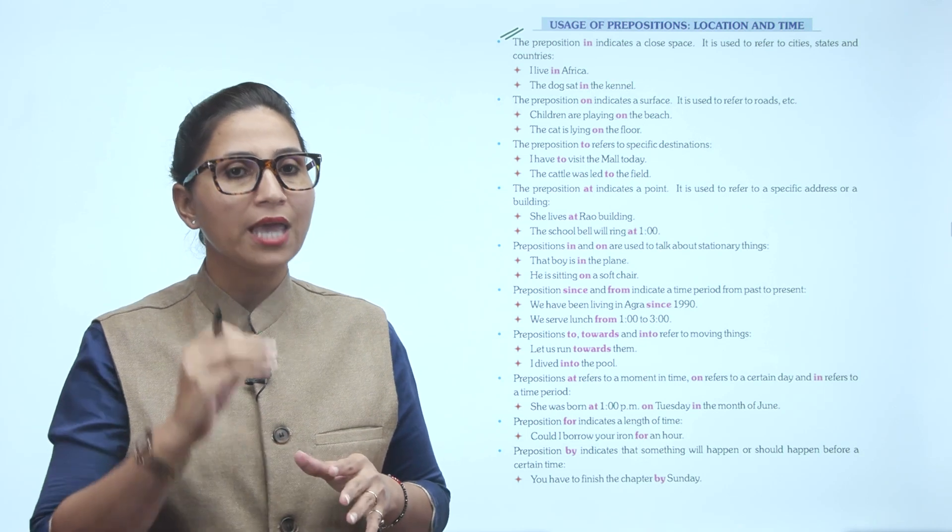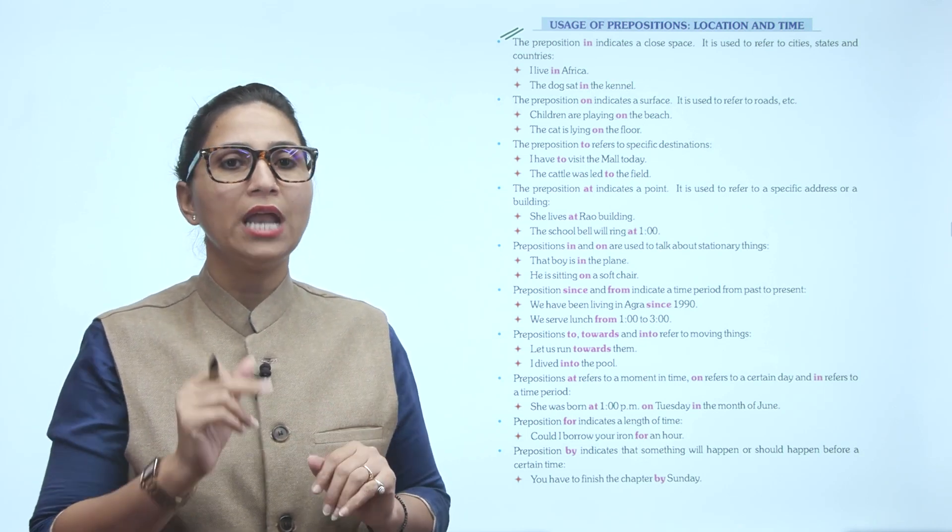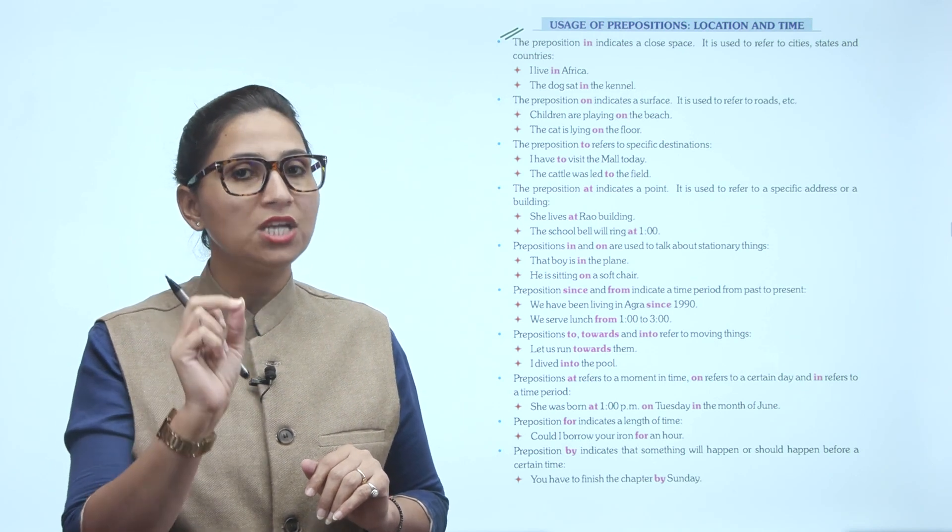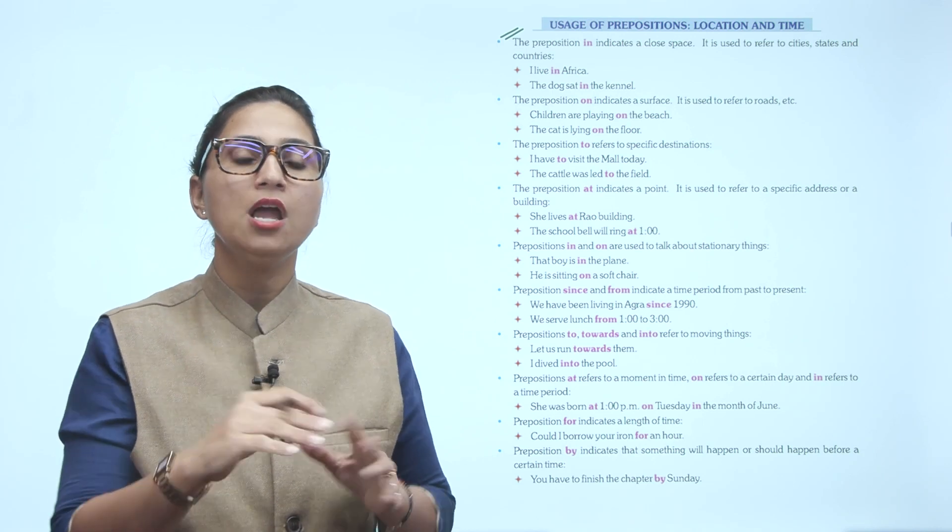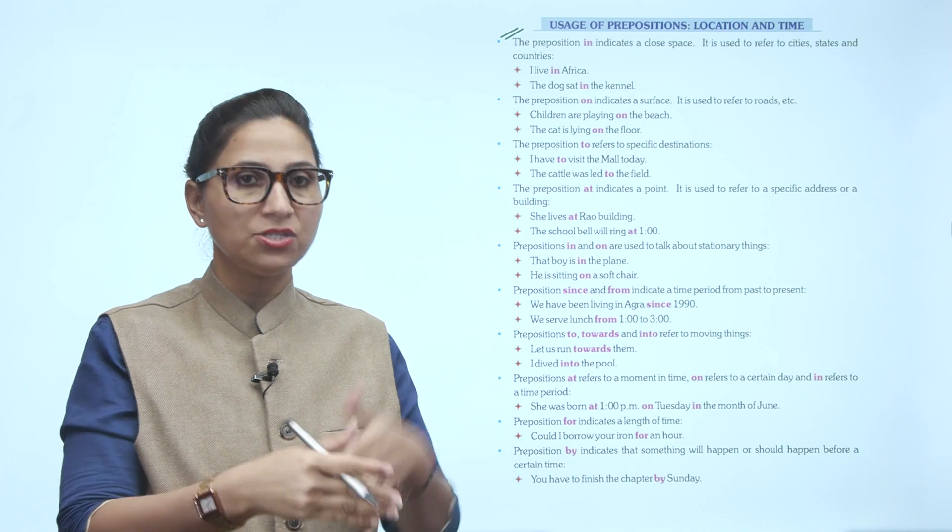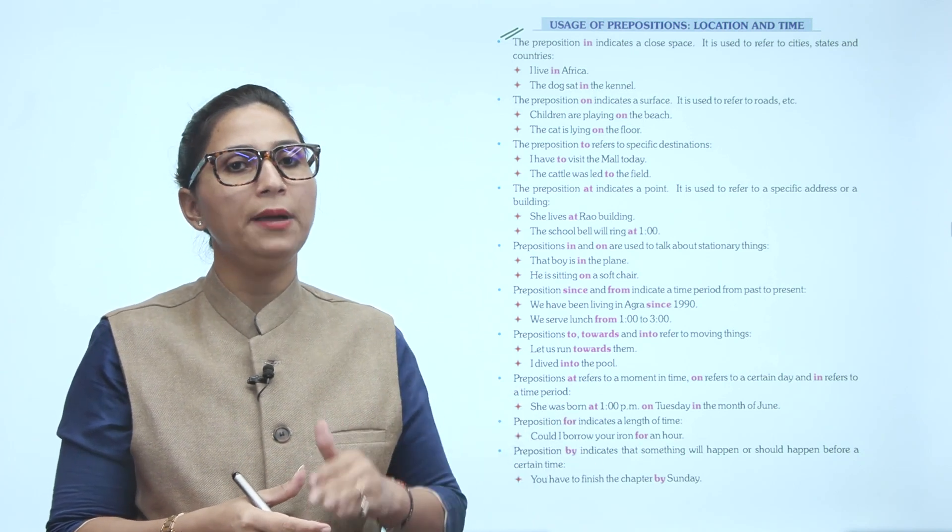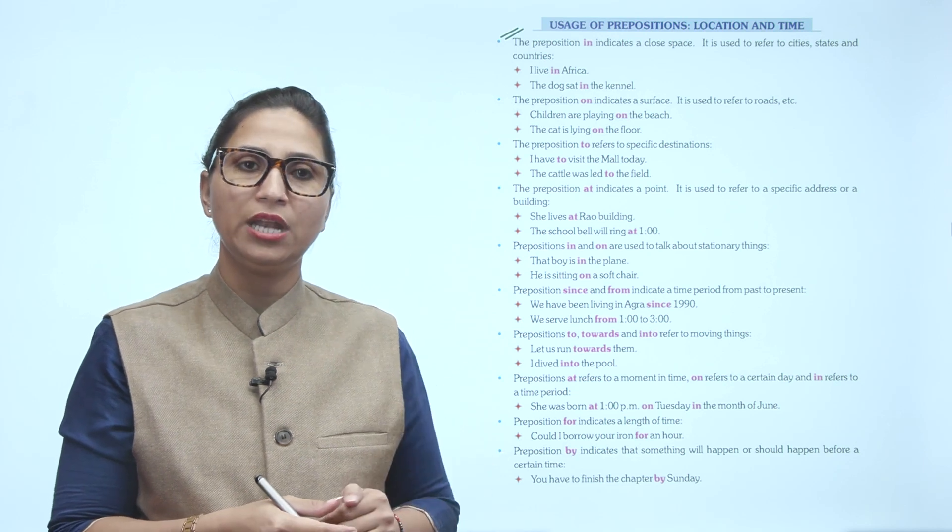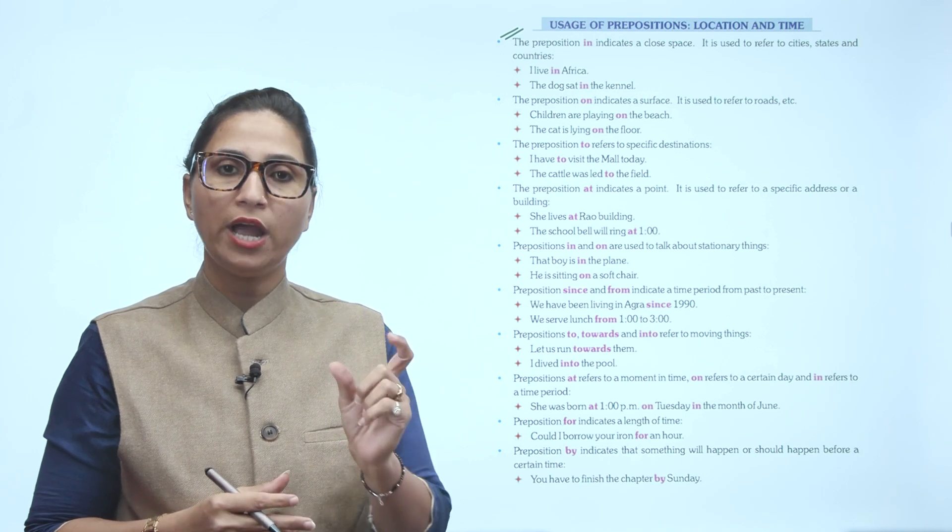The preposition ON indicates a surface. It is used to refer to roads etc. Children are playing on the bench. The cat is laying on the floor. The preposition TO refers to specific destinations. I have to visit the mall today. To visit means the destination is the mall. The cattle was led to the field. To here means the destination is the field.